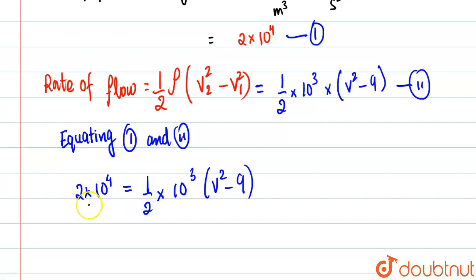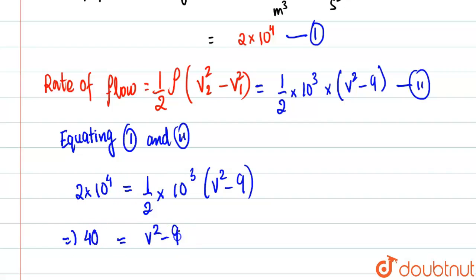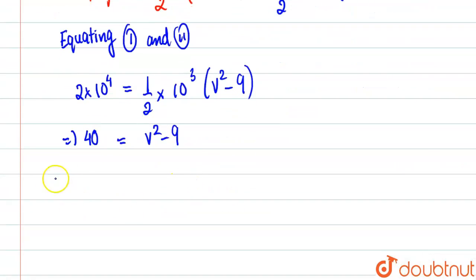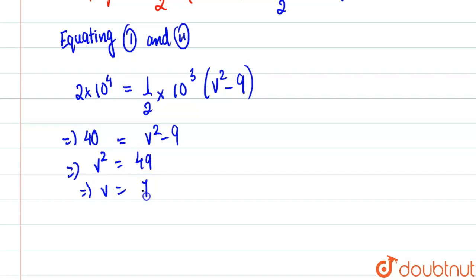Taking the 2 over, we get 4 into 10 to the power 4 equals 10 to the power 3 into (V2 squared minus 9), so 40 equals V2 squared minus 9. Therefore V2 squared equals 49, and V equals 7 meters per second.